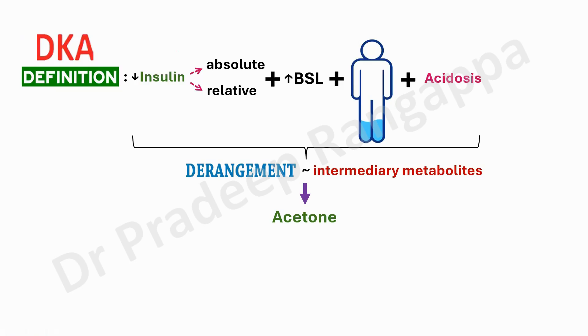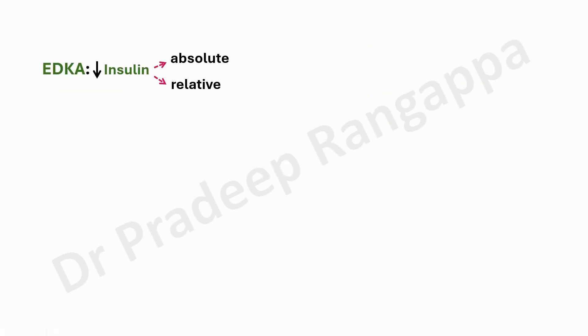Acetoacetic acid and beta-hydroxybutyric acid form the core of DKA. With EDKA, all these components remain, but the increase in blood sugar is not necessarily present — that is why we call it euglycemic. EDKA has reduced insulin, which can be absolute and relative, but there is euglycemia. Blood sugar more often will be less than 250; it can be normal or generally tends to be less than 250.